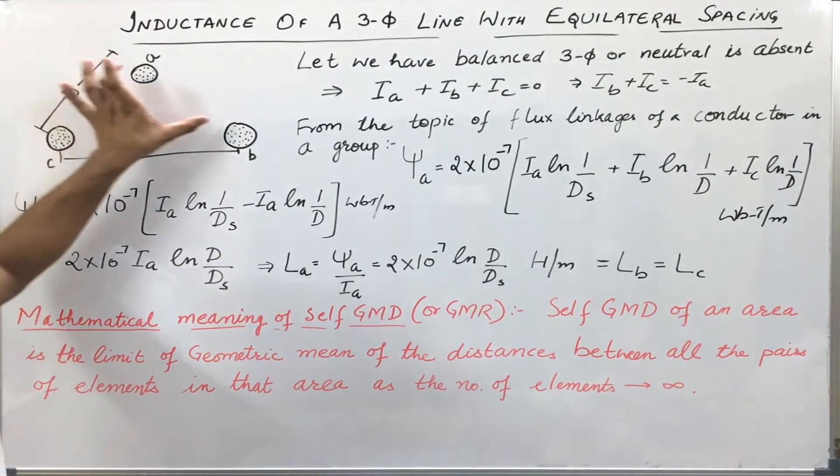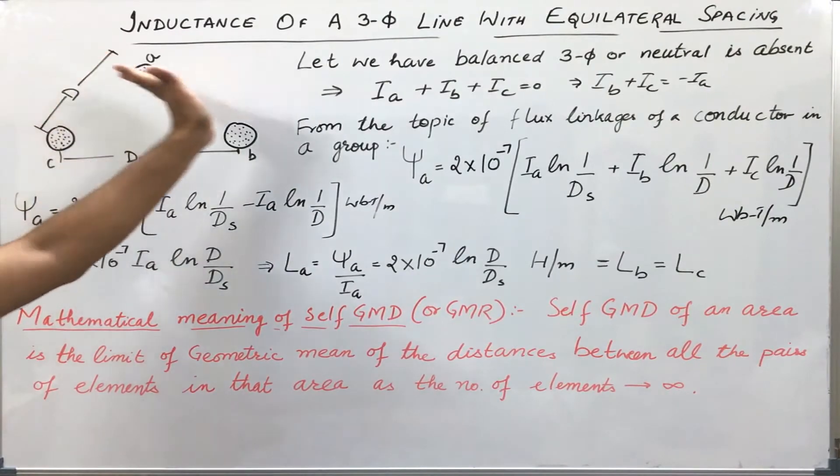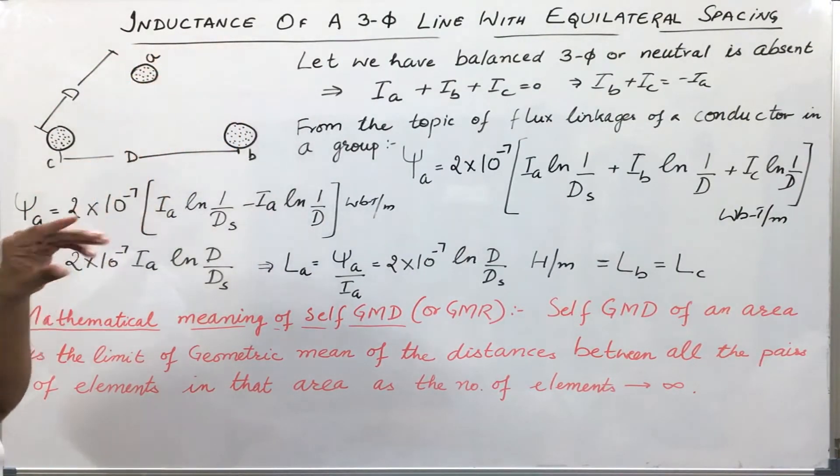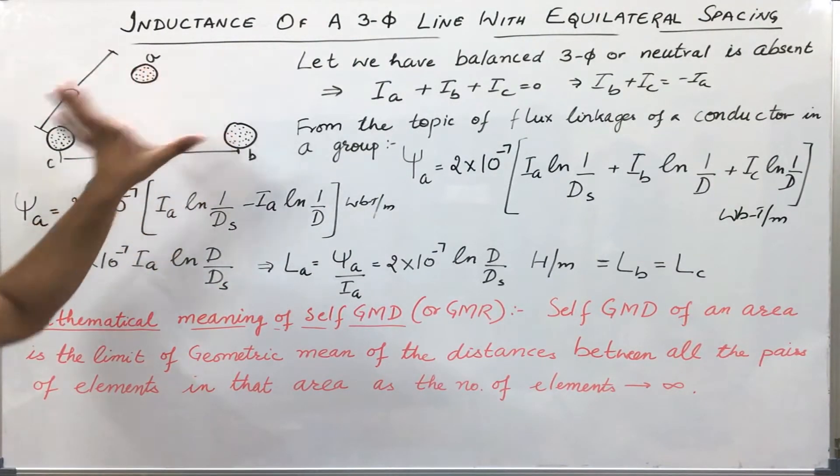The spacing between all the phases is symmetrical. That is, they are placed at the corners of an equilateral triangle. The spacing is equal D, D, and D.